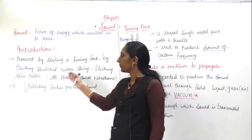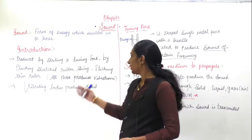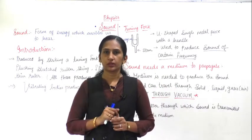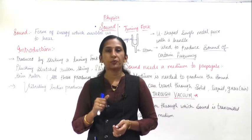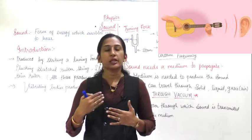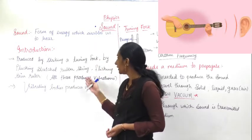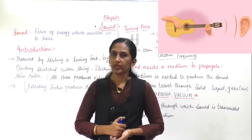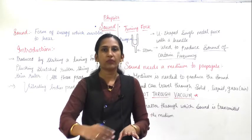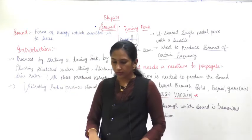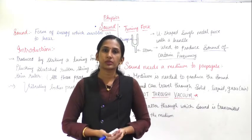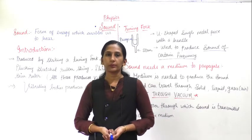Sound is also produced by plucking a stretched string. Violins and guitars have stretched strings — when you pluck the string of a guitar, the string vibrates and produces sound. Another example is flicking a thin ruler: place the ruler on a table with half hanging off the edge, flick it, and it starts vibrating. These vibrations produce sound that you can hear.